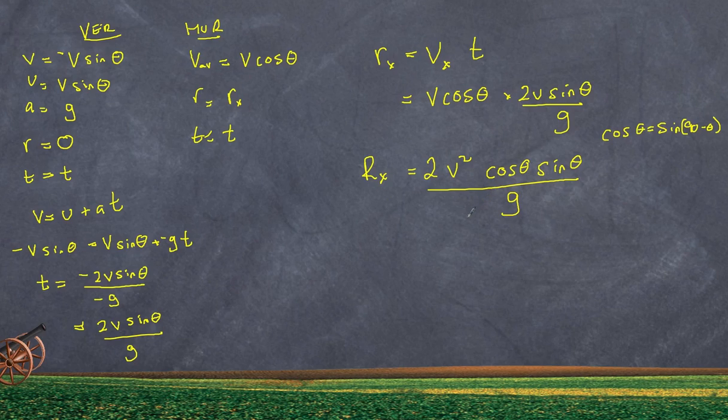So in other words, as long as the angles are supplementary, you're going to get exactly the same range. So if I fire off my object at an angle of, let's say, 30 degrees, then the answer here will be exactly the same if I replace that with 60 degrees. If I fire this off at 10 degrees, then the answer will be the same as if I fire it off at 80 degrees.